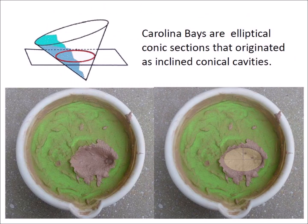The impact hypothesis explains the elliptical shape of the Carolina Bays and the origin of their rims. Carolina Bays are elliptical conic sections that originated as inclined conical cavities. An inclined conical cavity looks like an ellipse when viewed from above, as shown in this experimental impact on a sand and clay target. Raised rims are a typical characteristic of impact craters because impact cratering displaces material laterally by horizontal compressive forces and ejects debris ballistically to create stratigraphically uplifted rims.